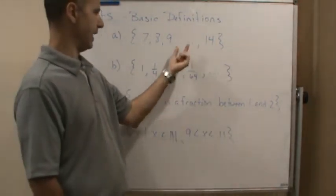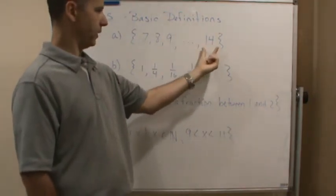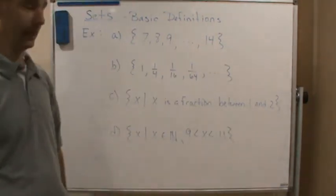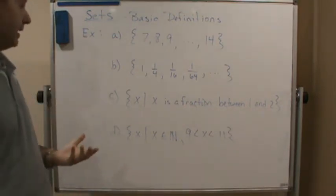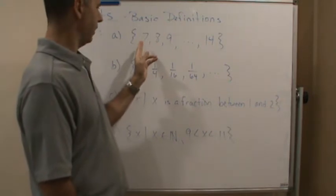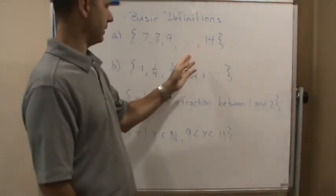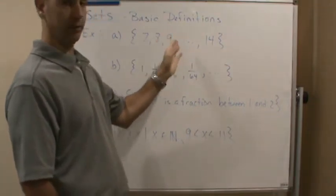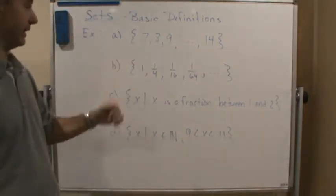Now remember, the ellipsis means that it continues in like fashion up until it stops. So here it goes to 14. So this would be a finite set because it only includes the numbers seven, eight, nine, all the way up to 14.